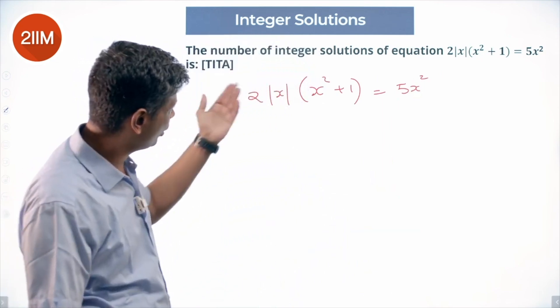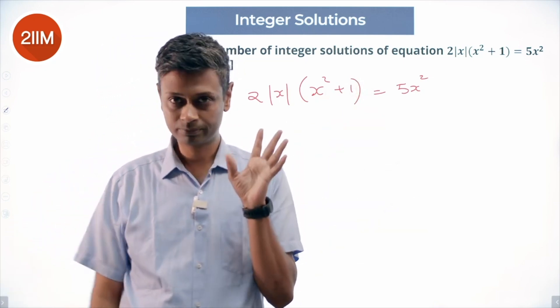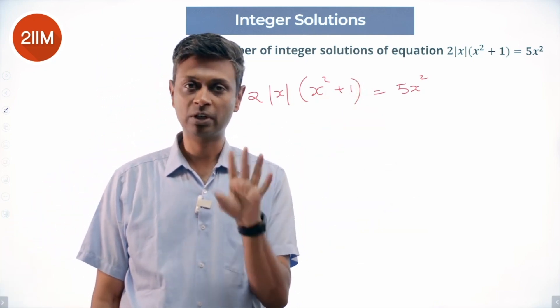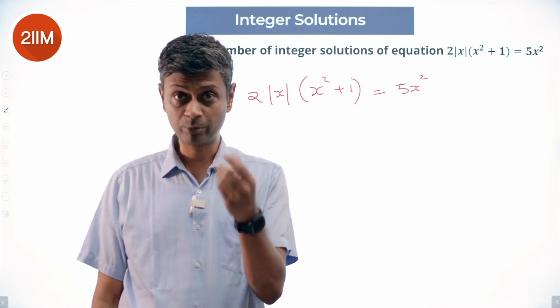First of all, we realize there is |x| here, there is x² here. If x equals k works, x equals minus k will work. If positive works, negative will work. If plus 2 works, minus 2 will work. If plus 11.3 works, minus 11.3 will work.